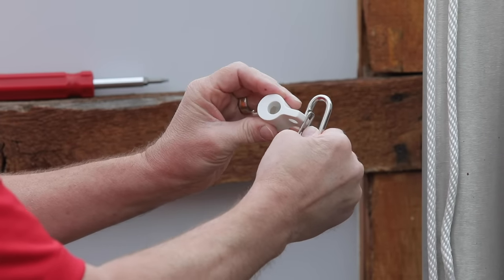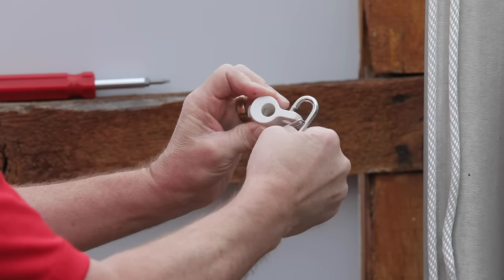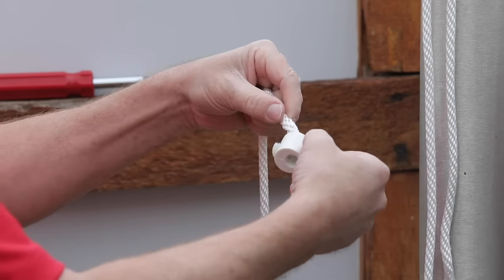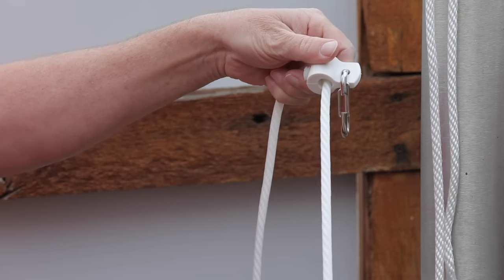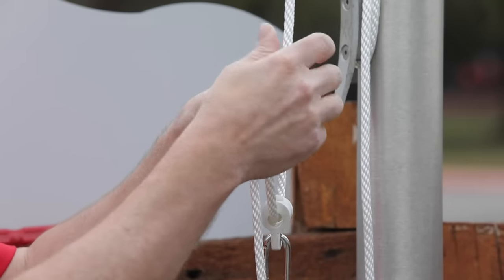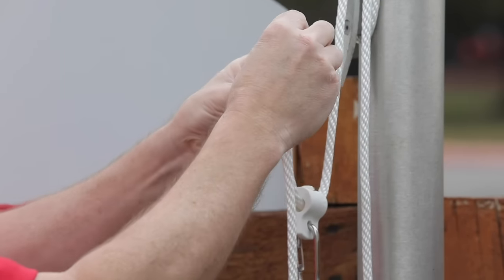Attach the stainless steel spring clip to the polymer zip clip. Slide one end of the halyard through the first zip clip. Slide the other end of the halyard through the second zip clip.